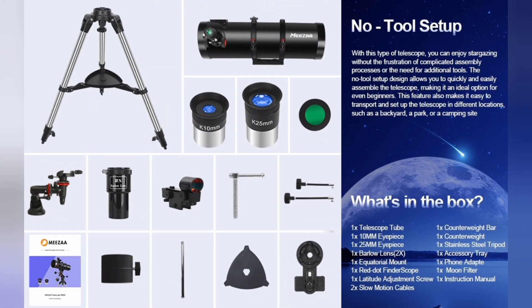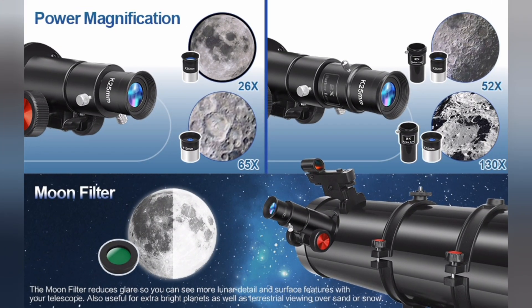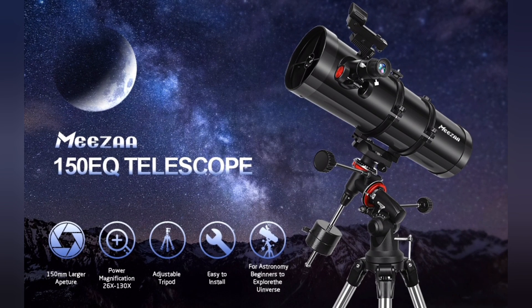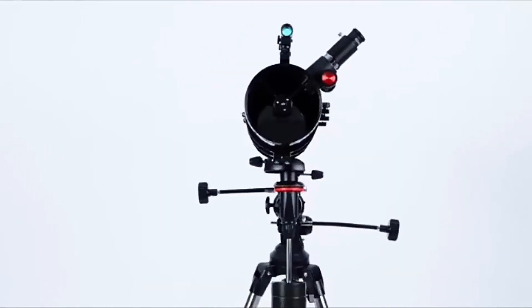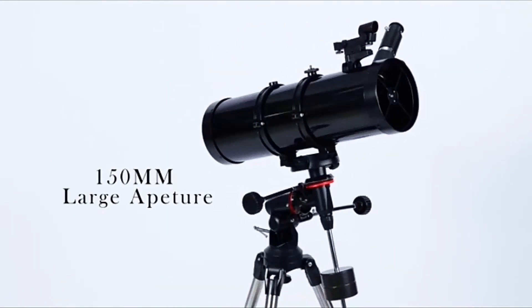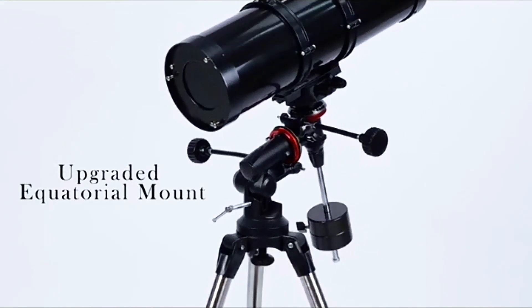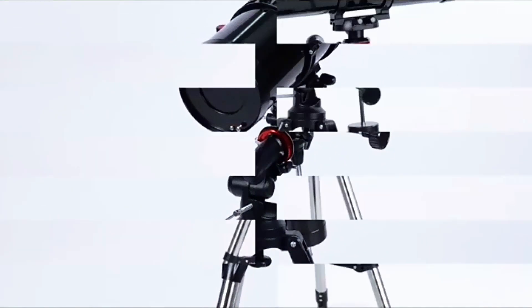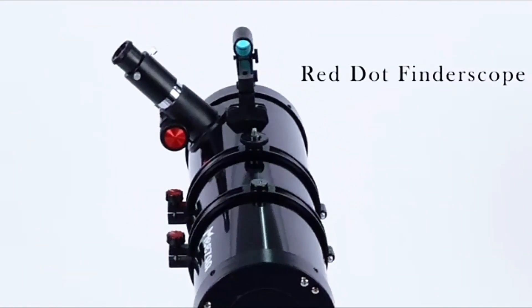The user-friendly manual equatorial mount, equipped with a dial and slow-motion cables, ensures accurate tracking of celestial objects, making it effortless to follow the mesmerizing dance of planets and stars across the night sky. With a sturdy, adjustable stainless steel tripod that minimizes unwanted vibrations, you can comfortably fine-tune your viewing height for an enhanced stargazing experience. The addition of a red dot finder scope simplifies locating objects, while the included moon filter reduces glare, safeguarding your eyes during prolonged sessions of observation.